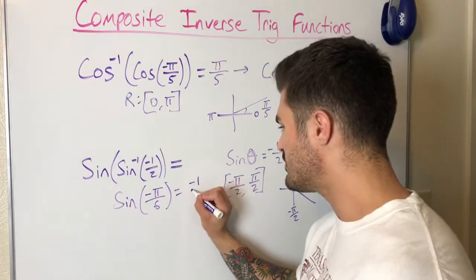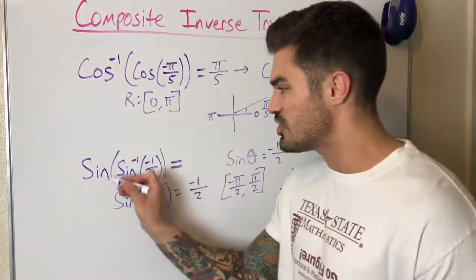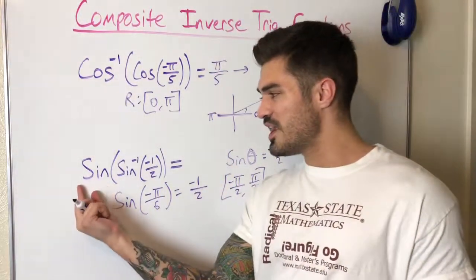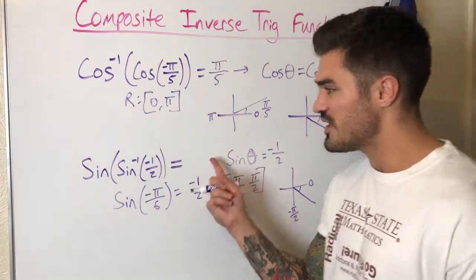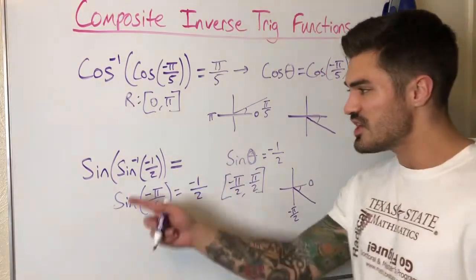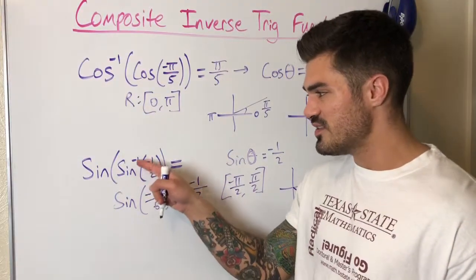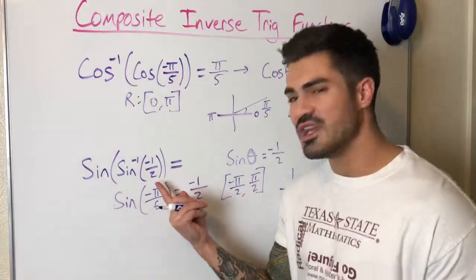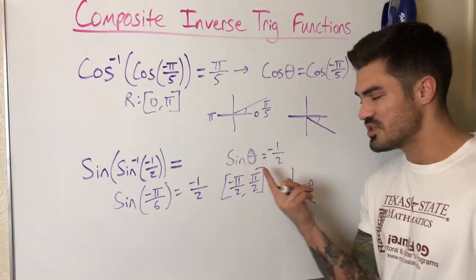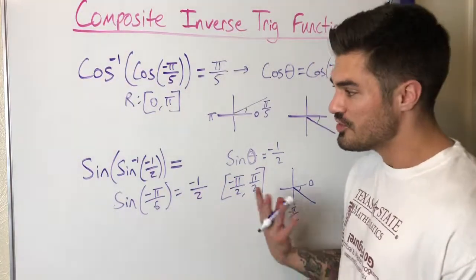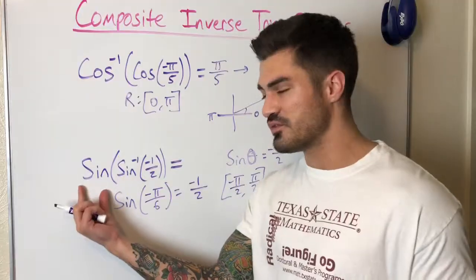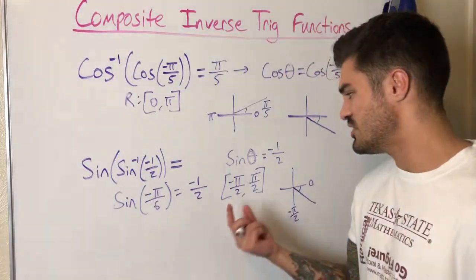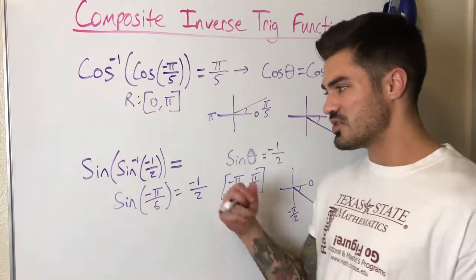There is actually a shortcut here: when you have a regular function on the outside and an inverse on the inside, you can just cross them out — as long as whatever's inside the inverse function is in its domain. If you had something like negative 2 inside sine inverse, that would give no solution. But if you're ever unsure whether you can cross them out, just work through all the steps — it really doesn't take that long.